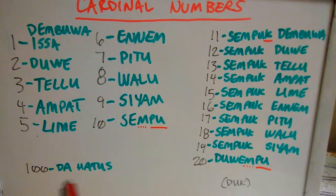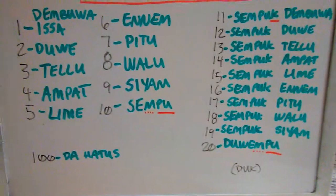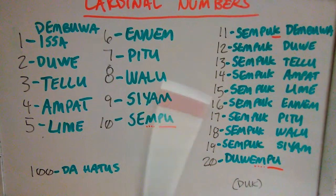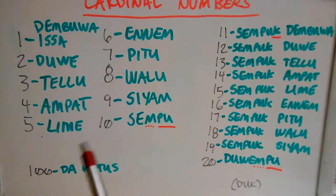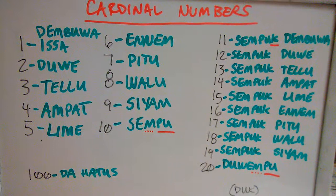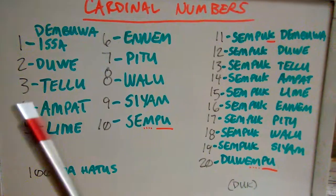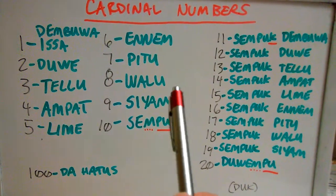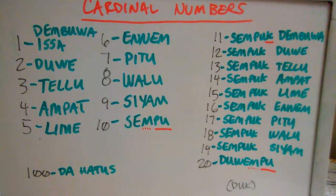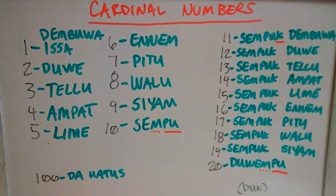For 100, it's Dahatus. And it's just that easy — even for larger numbers, you just use Duk and then whatever number follows, continuing on from there. So if you want to say 22, you take Duwempu plus Duk to get Duwempuk, and then add Duwe. This system is probably one of the easier ones compared to other Philippine languages.